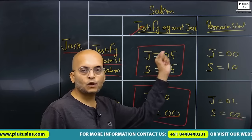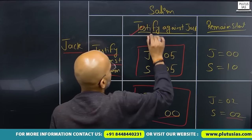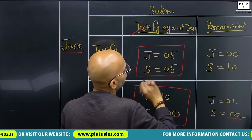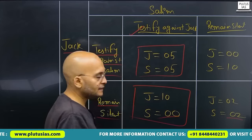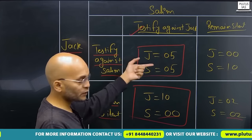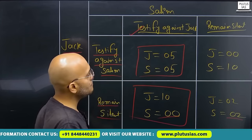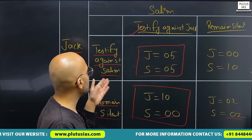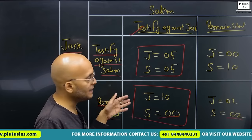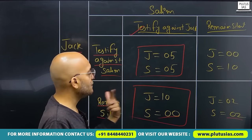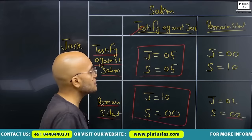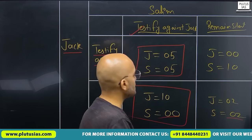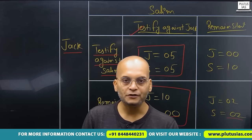You can apply this concept vice versa also. If Salim chooses to testify against Jack, then Jack will also testify against Salim. And if Salim chooses to remain silent, Jack again has two options: if he remains silent he gets two years, but if he testifies he gets zero years — so obviously Jack will testify again. That's it — the concept of dominant strategy is clear.